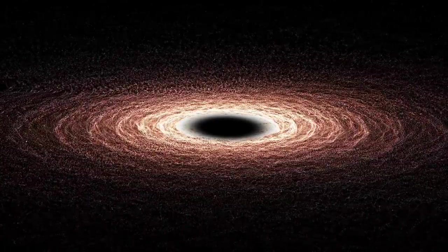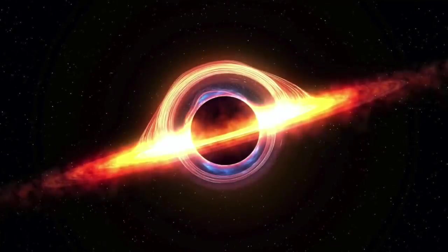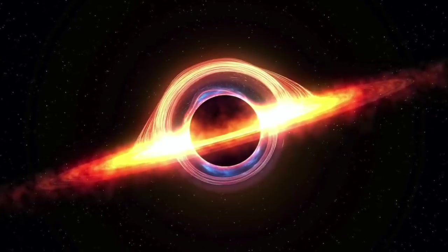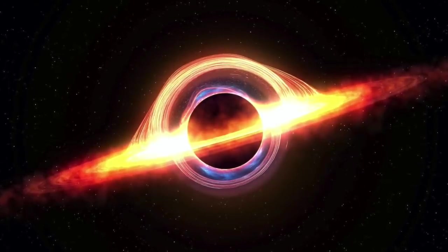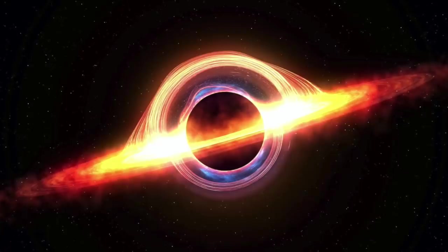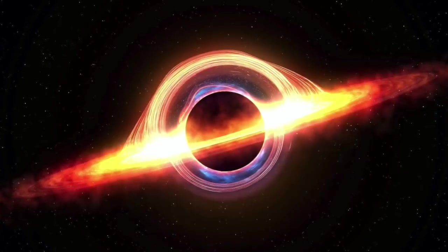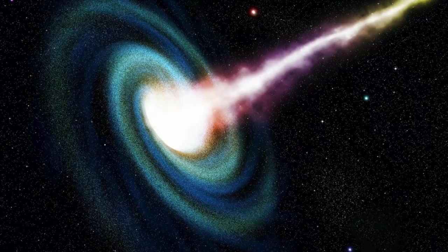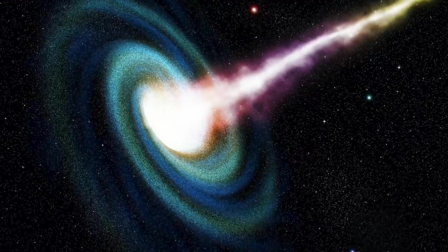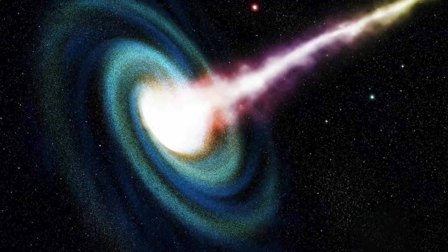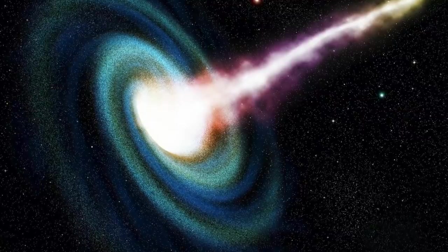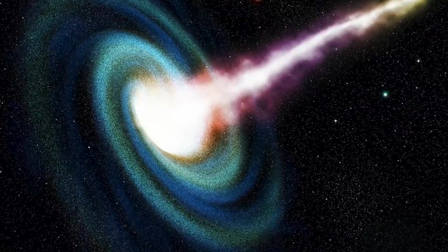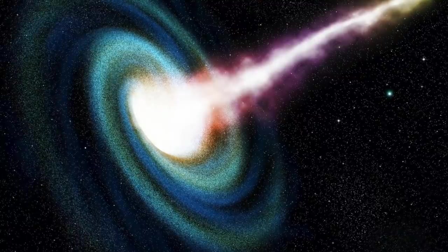IC 1101 black hole. Located around 1 billion light years away from us here on Earth is the Abell 2029 galaxy cluster. Within this cluster is the IC 1101 supergiant elliptical galaxy. As mentioned earlier, an elliptical galaxy is the product of two spiral galaxies merging together.